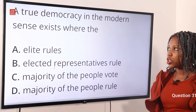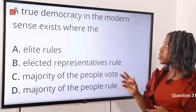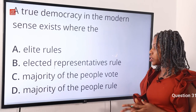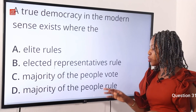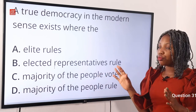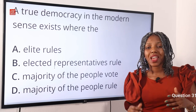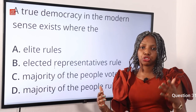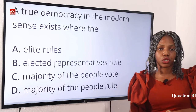Question 31. A true democracy in the modern sense exists where the dash. Option A, elite rules. Option B, elected representatives rule. Option C, majority of the people vote. Option D, majority of the people rule. The answer is Option B — elected representatives rule. A true democracy is a government where people exercise their governing powers through their representatives, who are elected through a free and fair election.